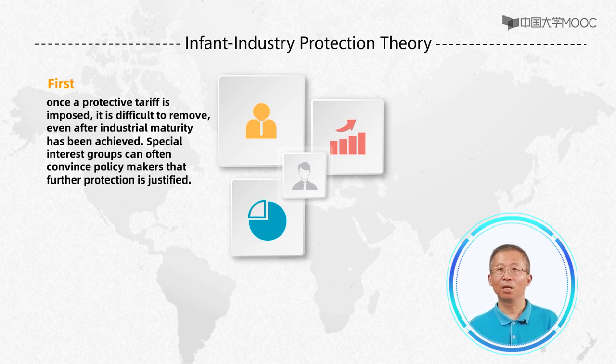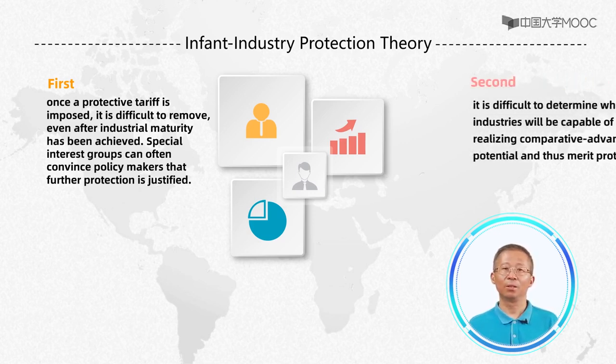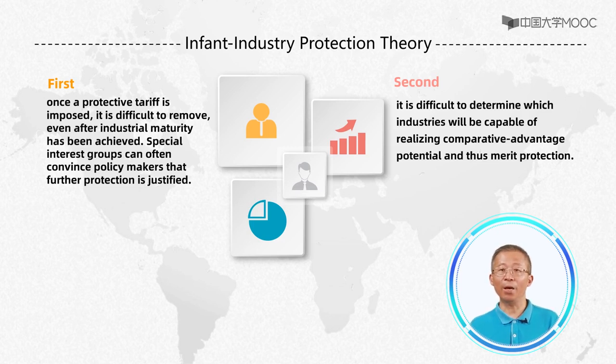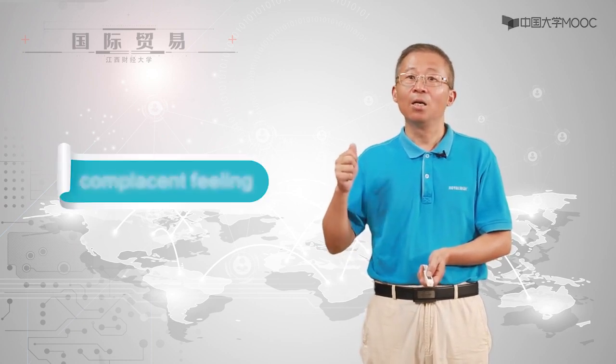It is difficult to determine which industries will be capable of realizing competitive advantage potential and thus merit protection. Protection may encourage firms to be inefficient from the start. If a developing industry has effective protection from competition, it may lack the competitive pressures to be efficient and ready to compete. Protection can create a complacent feeling, which means firms are not ready when protection measures are reduced.